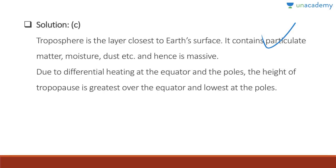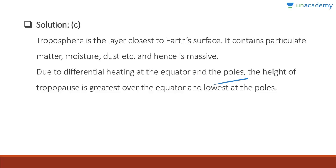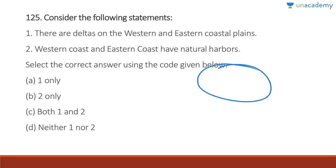The troposphere is the layer closest to Earth's surface. It contains particulate matter, moisture, and dust, making it very massive. Due to differential heating at the equator and poles, the height of the troposphere is greatest over the equator and lowest at the poles.